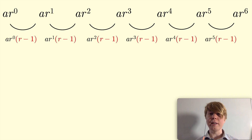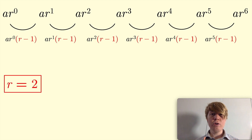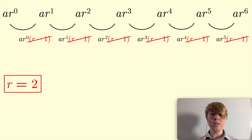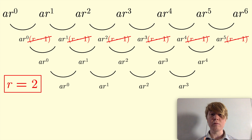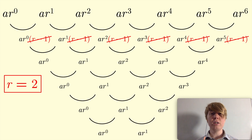We don't really want these r minus 1 terms, because if they were equal to 1, then the differences between each term would give you the original sequence repeating. So let's try setting r equals 2. Then your r minus 1 terms all disappear — they're all just equal to 1. And then your differences between each successive term are, in fact, just the original sequence repeating over and over. Look at the differences between these terms, it's just the same. We get the sequence repeating. This is really nice — it suggests that perhaps we need a geometric sequence with r equals 2.